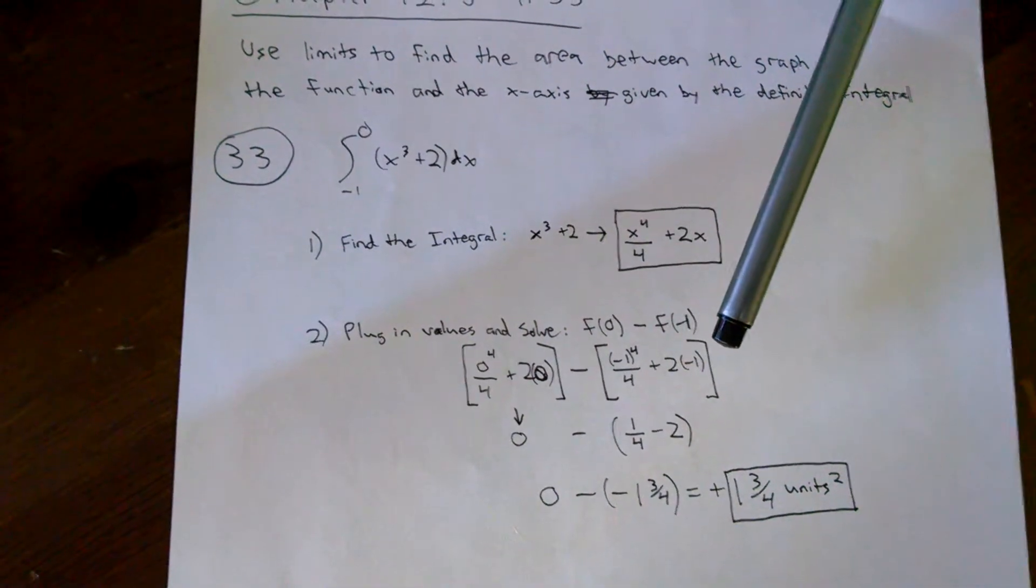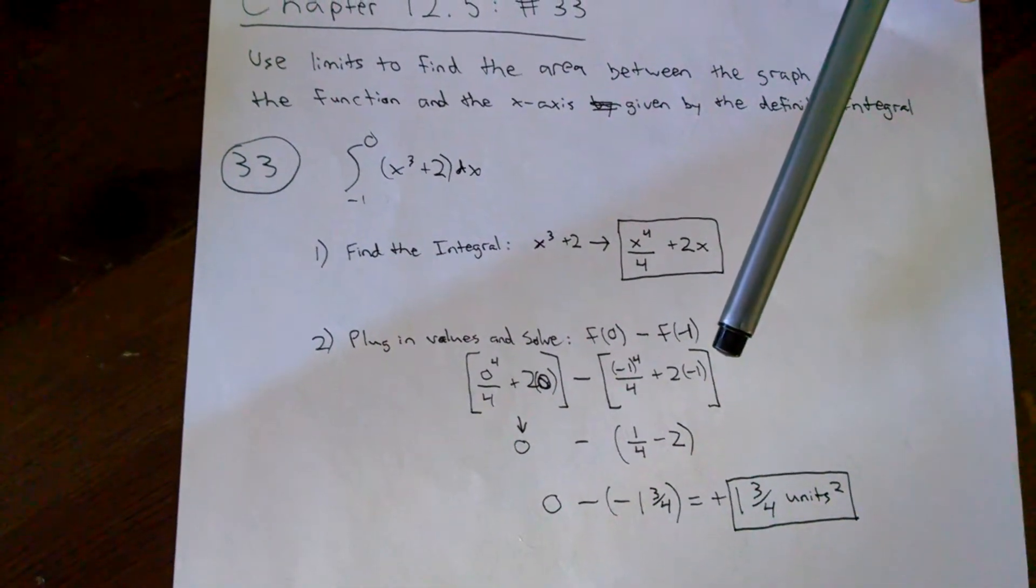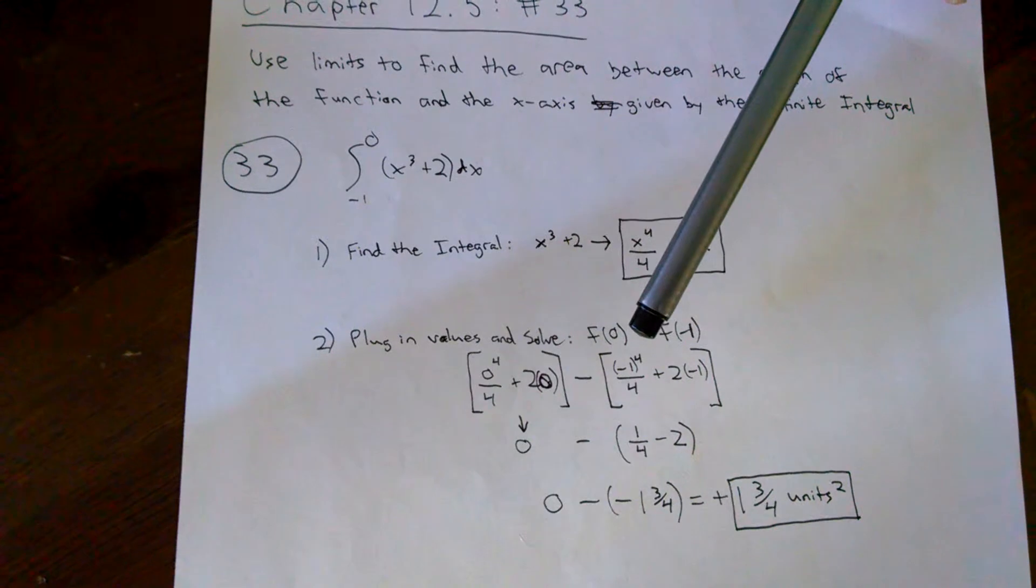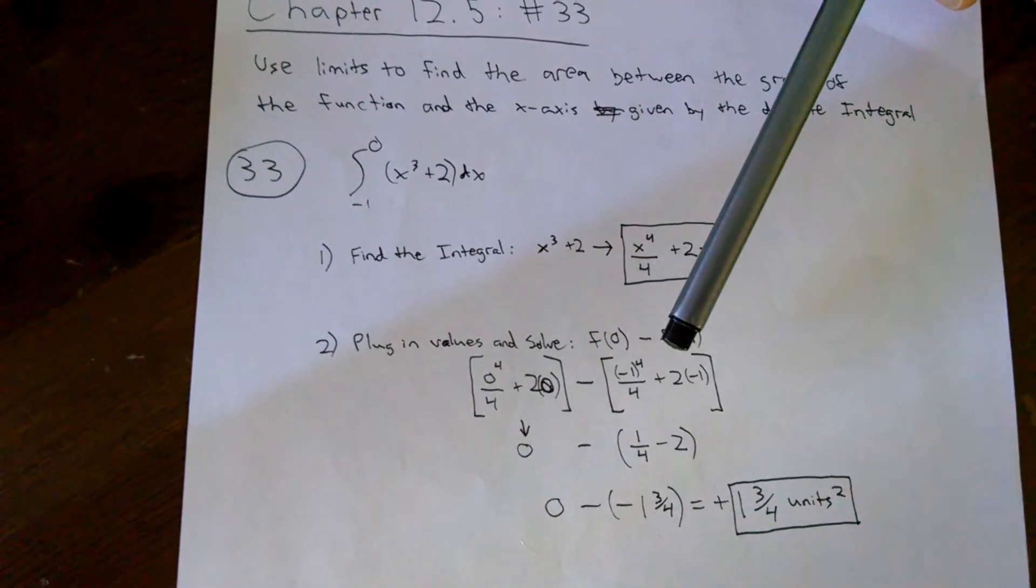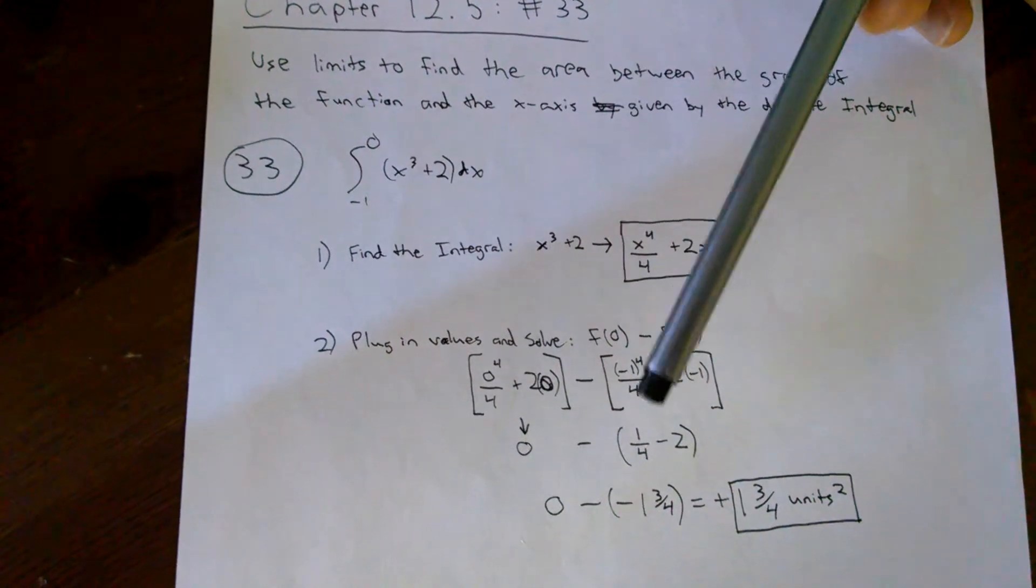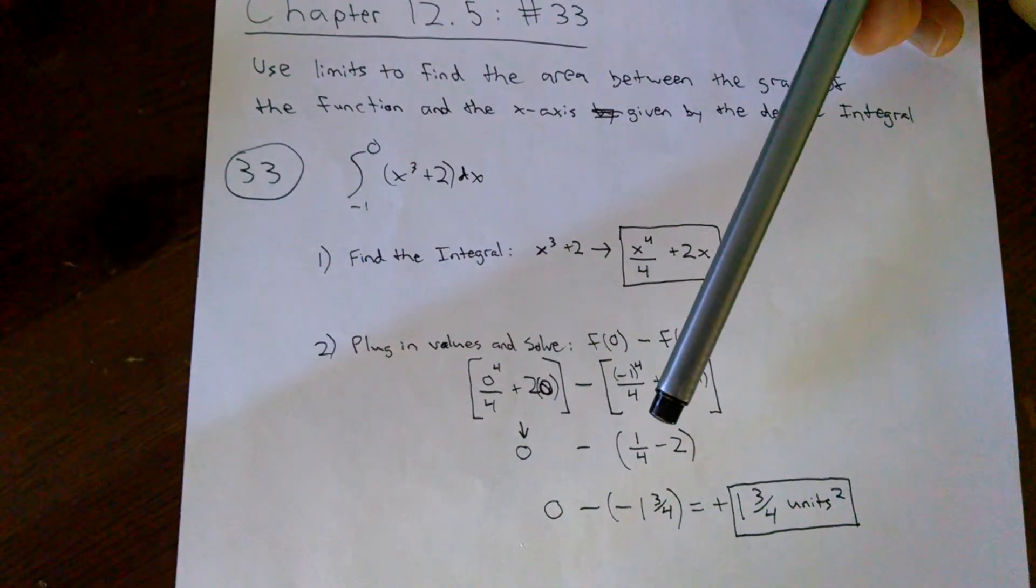Then we solve for f(-1), which gives us (-1)⁴/4 + 2(-1). This becomes 1/4 - 2,